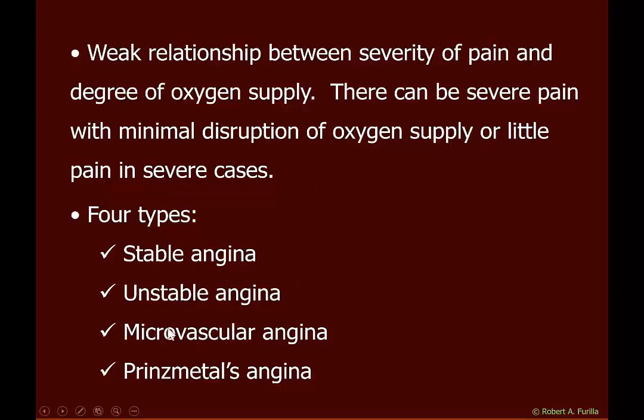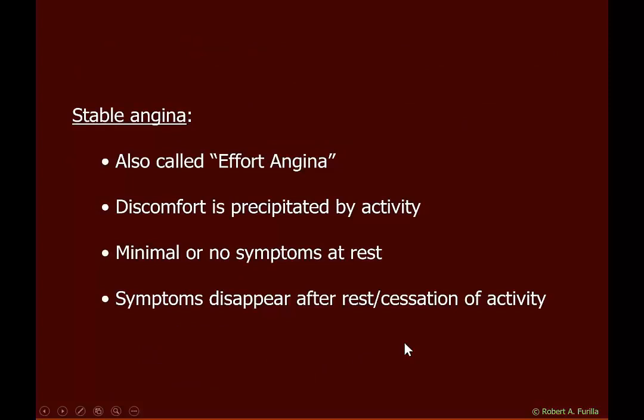First, stable angina. Stable angina occurs because the plaque causing obstruction is stable — calcified and unlikely to rupture. We also call this effort angina because it is precipitated by activity: as you exercise and demand goes up, supply cannot keep up and you feel chest pain. At rest, the chest pain is not present because, as the earlier figure showed, the obstruction does not reduce blood flow enough to become a factor at rest. After cessation of activity, symptoms disappear as supply can then keep up with demand.